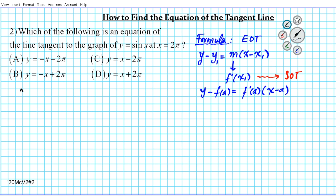We need x one. X one is where you are finding the equation of the tangent line at, and it is two pi. So x one is two pi, and y one is basically the output when you evaluate the function at the x one value. So y one is the function evaluated at two pi — all we're going to do is plug two pi into sine of two pi.